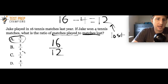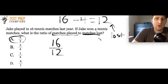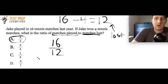Note that I put 3 over 4 as an answer choice, because sometimes on the test they'll flip the numbers. If you got the ratio backwards — matches lost to matches played — you might have chosen B. On the test, remember: if it says ratio of matches played first, put matches played on top.